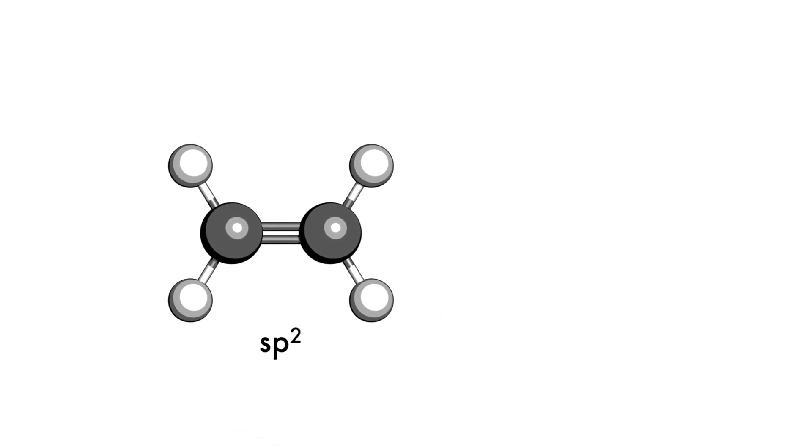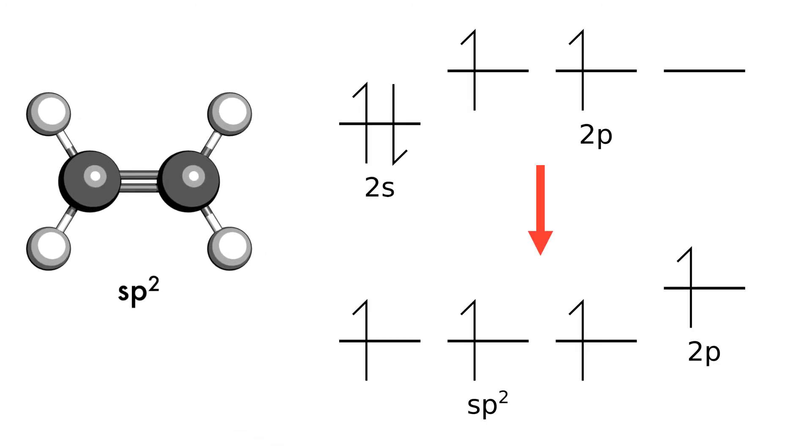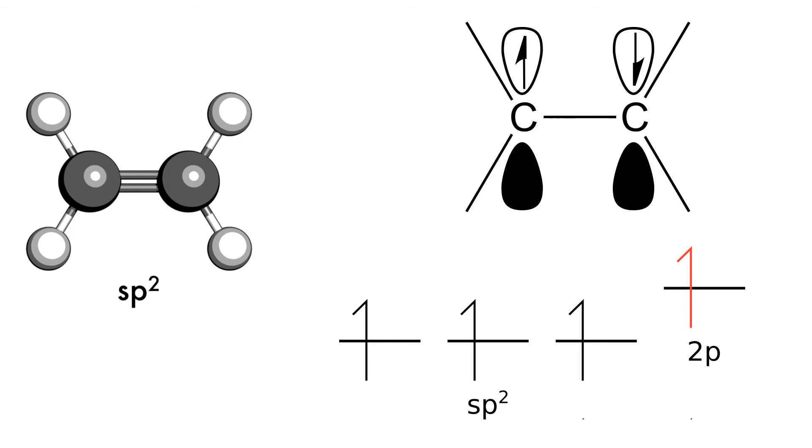sp2 hybridized orbitals in ethene. Three orbitals will be hybridized to give the sp2 carbon. This leaves one unhybridized electron in a 2p orbital. Through the overlap of these orbitals, the pi bond is formed, which is the second bond in the double bond.